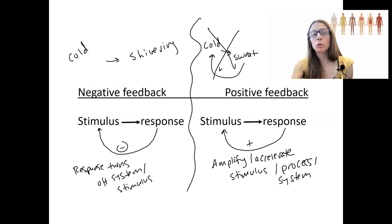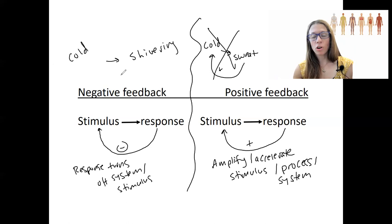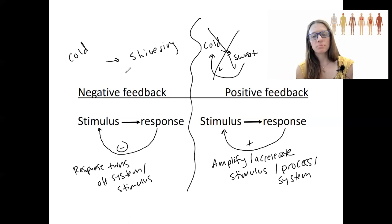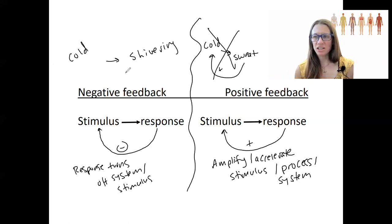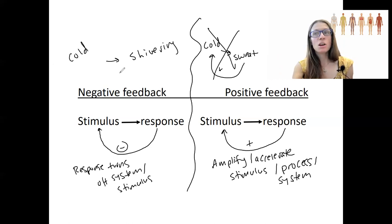You might think: what causes it to stop? For negative feedback, the response causes the system to turn off given environmental conditions changing. For positive feedback, something else has to change to stop it — an external event. An example is having a baby. When the baby comes out, that's a change — that's something different.